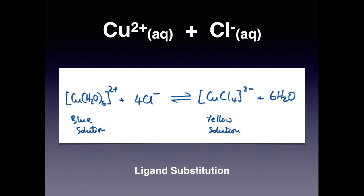This is an example of a ligand substitution reaction because the 6 water ligands are replaced or substituted by these 4 chloride ion ligands. The colour changes from blue solution to yellow solution. Often when you do this in the lab, the test tube looks green because you've got a mixture of blue and yellow present due to this being in equilibrium.